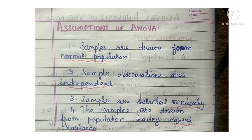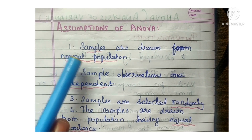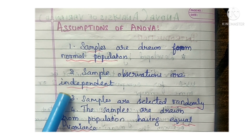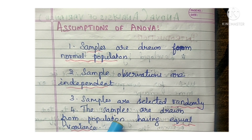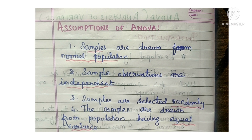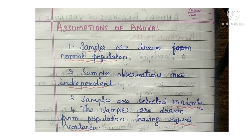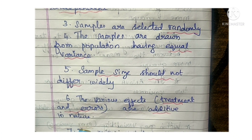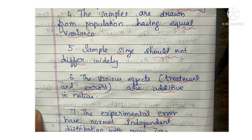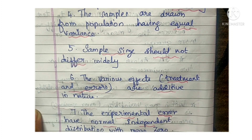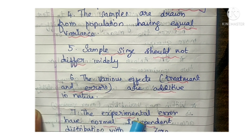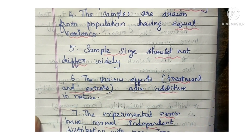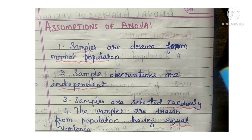The assumptions of ANOVA are: samples are drawn from a normal population; sample observations are independent; samples are selected randomly; and the samples are drawn from populations having equal variance. In the normal distribution, the mean is equal to 0 and the standard deviation is equal to 1, which also applies here.